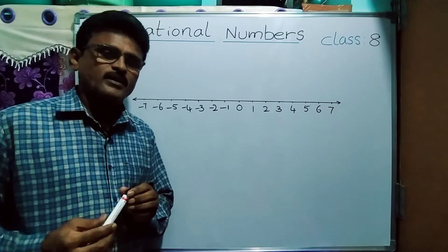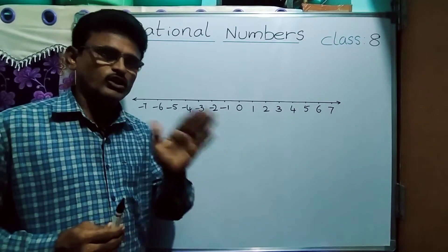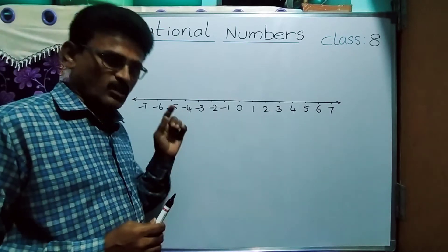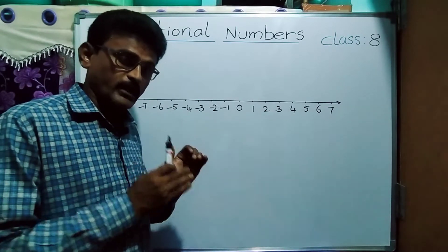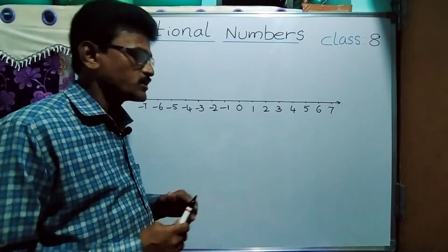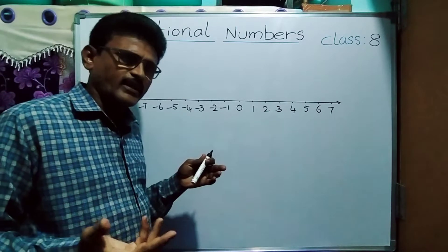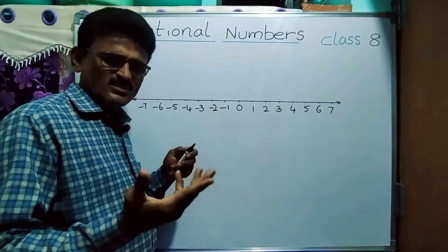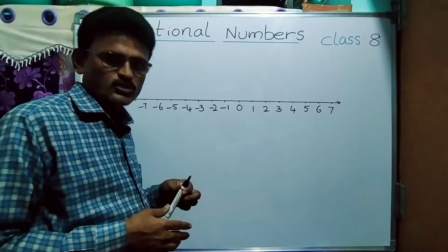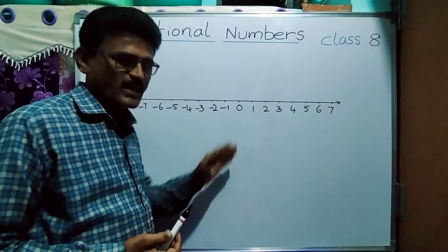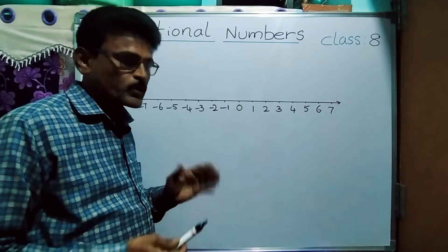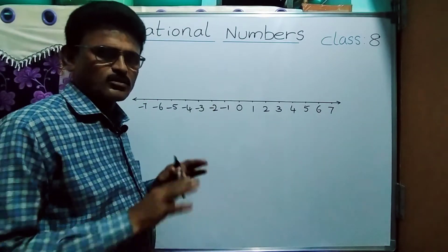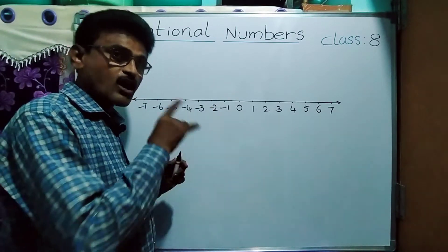Natural numbers are 1, 2, 3, 4, and whole numbers are 0, 1, 2, 3, 4. So all natural numbers are whole numbers. Next, all whole numbers are integers — integers have some extra numbers, the negative numbers, so all whole numbers are integers. Next, all integers are also rational numbers.